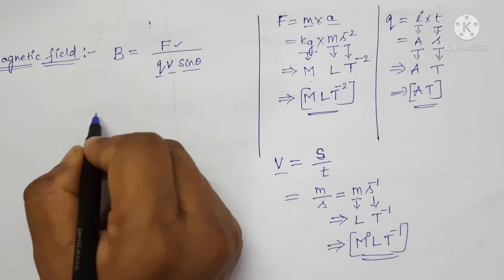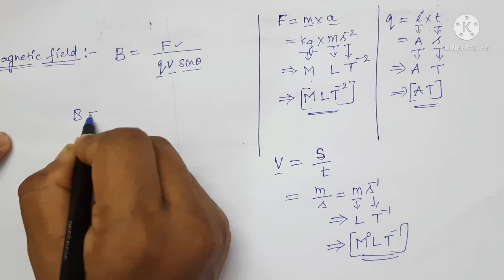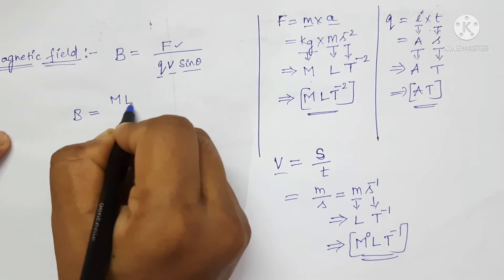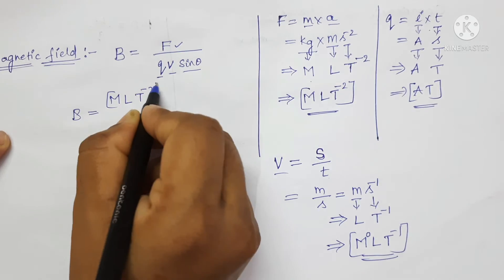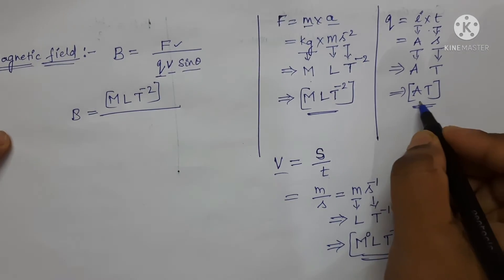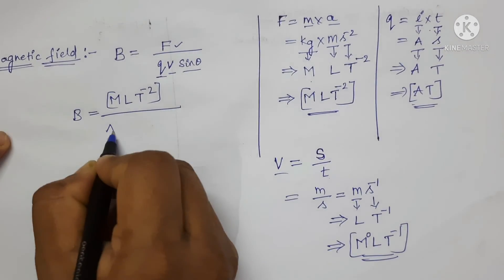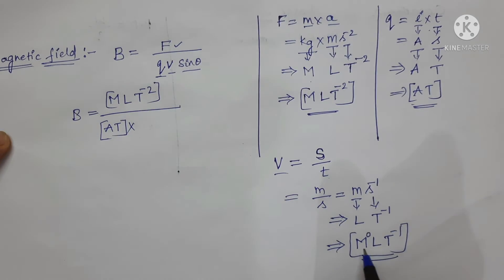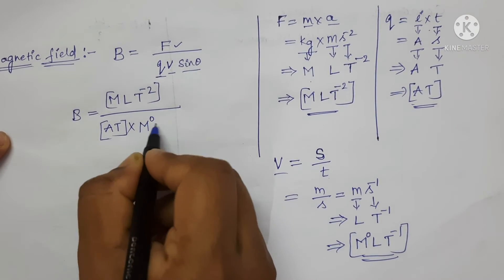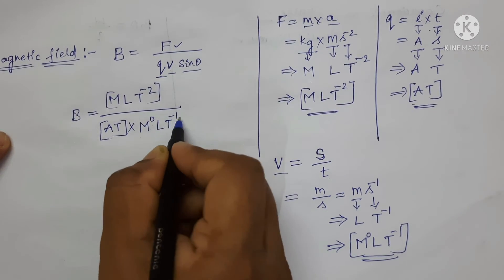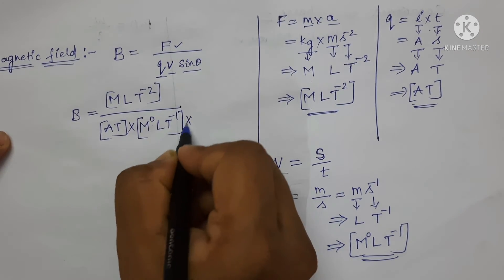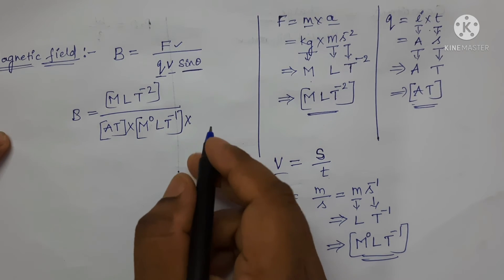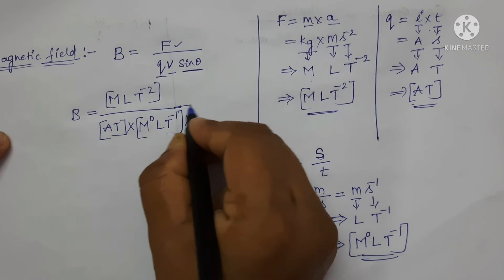Now substitute these values into the equation for B. Writing for force: [M L T⁻²], divided by charge [A T], multiplied by velocity [M⁰ L T⁻¹], multiplied by sinθ. Since all trigonometric ratios are dimensionless quantities, we replace sinθ with 1.